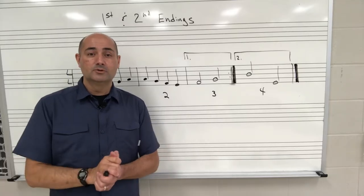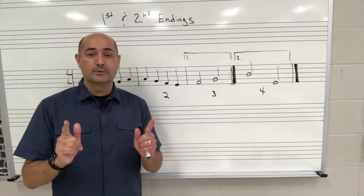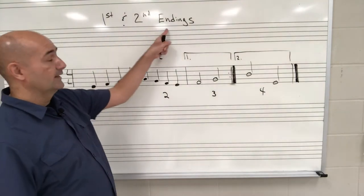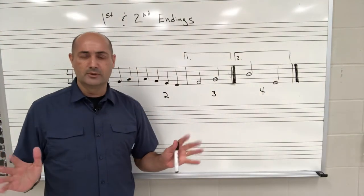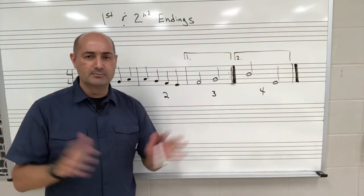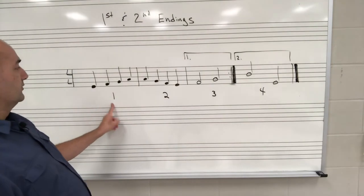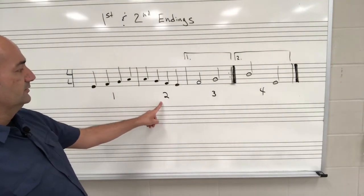Hi and welcome to Music Theory in About a Minute. Today we're going to discuss first and second endings. This is how they work — it's very simple. We start out the song in measure one, then we play measure two.